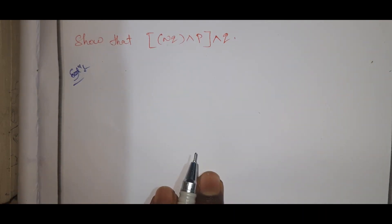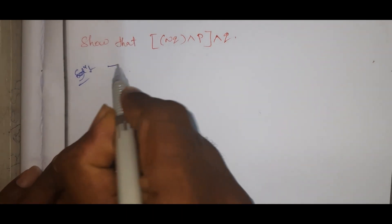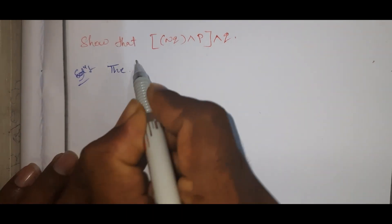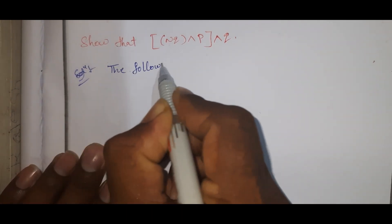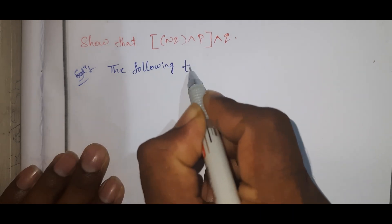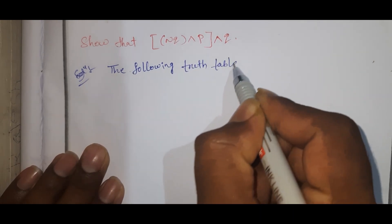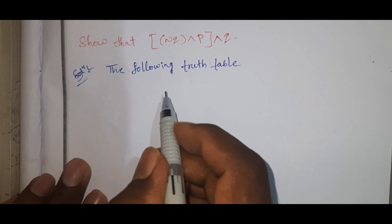The AND symbol is there. When any two statements are both true, the result is true. If any one is false, the result is false. The following truth table shows this.